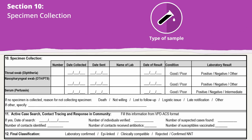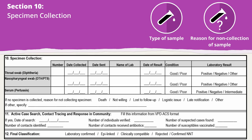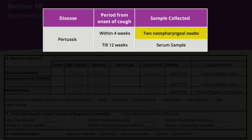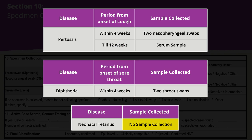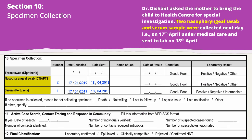In section 10, fill in the details of specimen collection. Remember to mention reasons if a sample is not collected. In pertussis, two nasopharyngeal swabs should be collected within 4 weeks, and serum should be collected up to 12 weeks of onset of cough. In diphtheria, two throat swabs should be collected within 4 weeks of onset of sore throat. No sample needs to be collected in neonatal tetanus cases, as its diagnosis is a clinical one. Nasopharyngeal swab and serum samples were collected on 17th April and sent to the lab on 18th April.